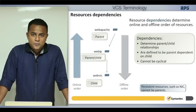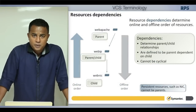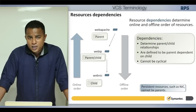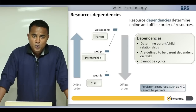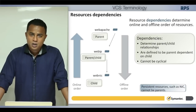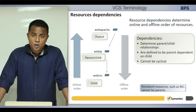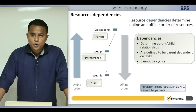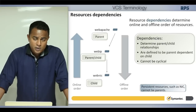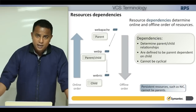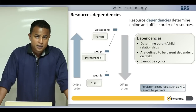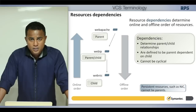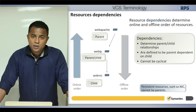Resource dependencies tell VCS the sequence in which resources should start and stop. Without dependencies, if you add 10 resources VCS will try to start everything together. For example, a disk group must be imported first, then the volume started, then the file system mounted — you must define these dependencies. Dependencies are defined as parent dependent on child: the first resource to start is the child, and the parent can only come up after.